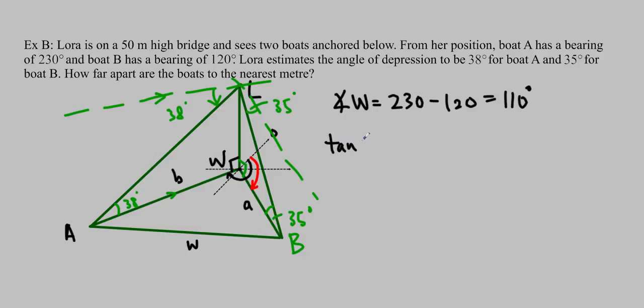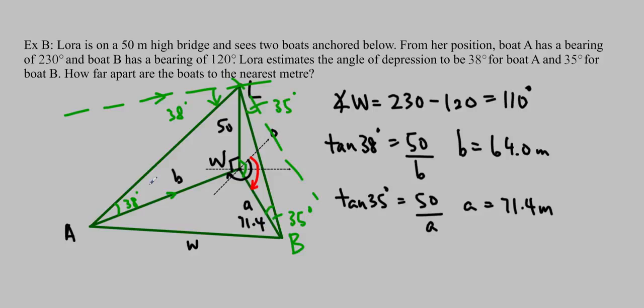And also, we could find our A and our B because we've got two right-angled triangles. So tan 38 degrees is equal to the opposite, which is 50 over B. And by using our calculators, we'll find that B is equal to 64.0 meters. If we use this triangle over here, we'll find that tan 35 degrees is equal to 50 over A. So A is equal to 71.4 meters.